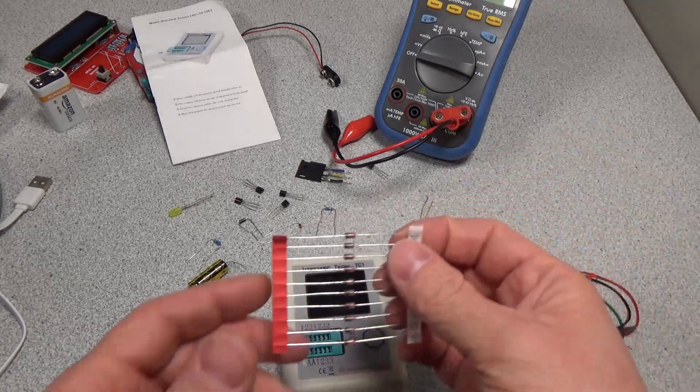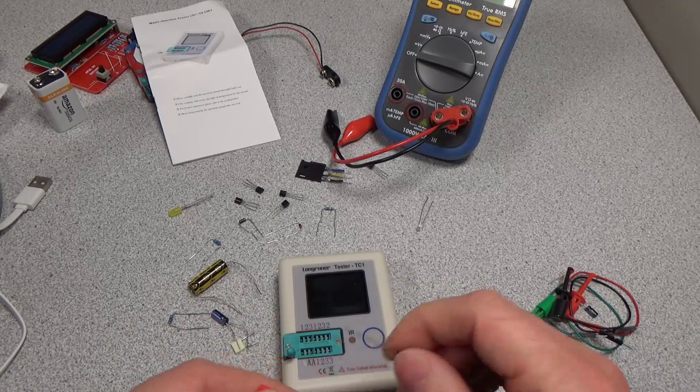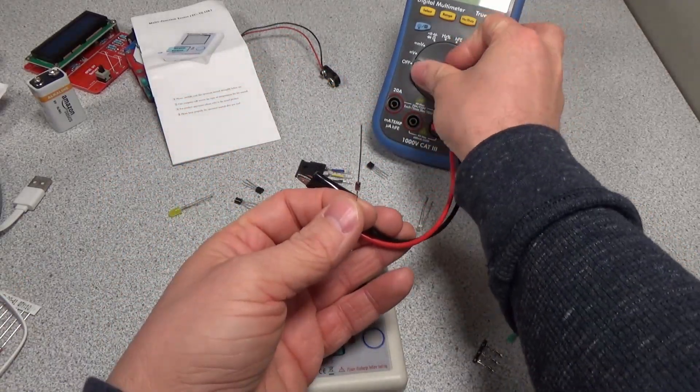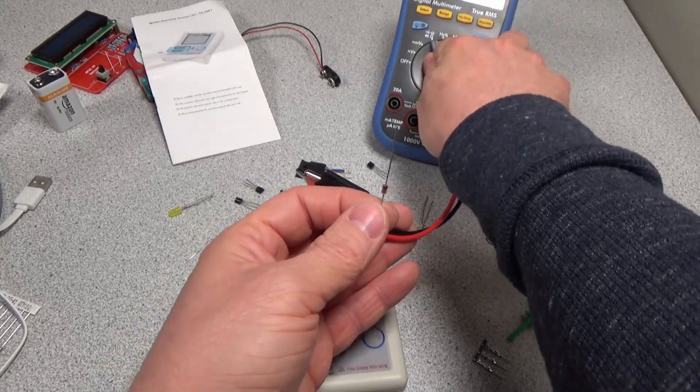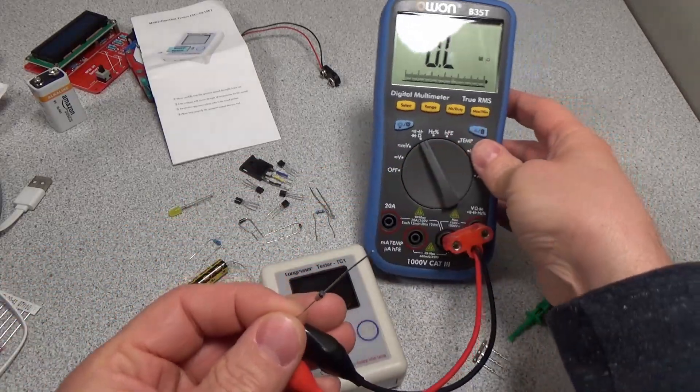And so my component I'm going to try and fool it with, we have a 3 volt zener diode. So I'm curious if it'll be able to detect the voltage drop of this. So first things first, let's turn on a multimeter and see what it does with the diode.